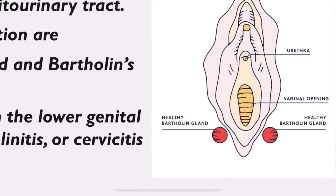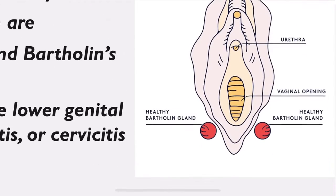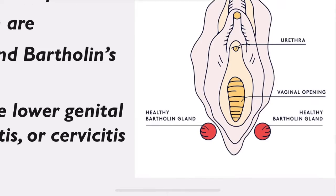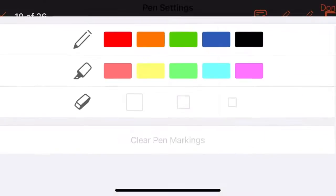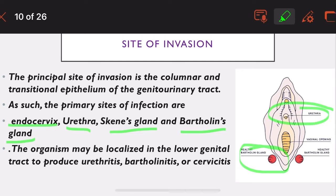In the picture you can see Bartholin's gland in the posterior wall, Skene's gland anteriorly, and the urethra. The principal infection sites are the endocervix, urethra, Skene's gland on the anterior vaginal wall, and Bartholin's gland on the posterior vaginal wall.